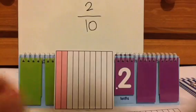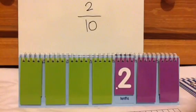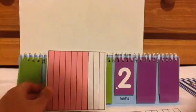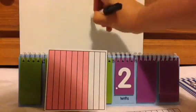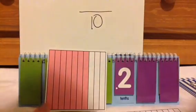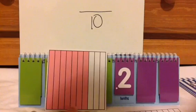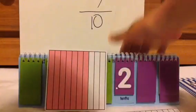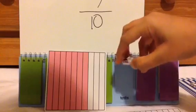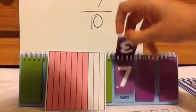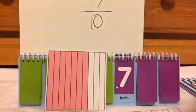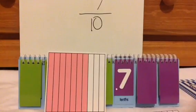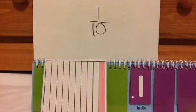Let's look at another example. Ten pieces: one, two, three, four, five, six, seven out of ten are shaded in. This is seven tenths. So the fraction is seven over ten and the decimal is zero point seven.